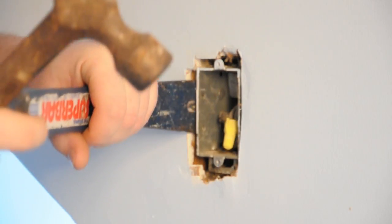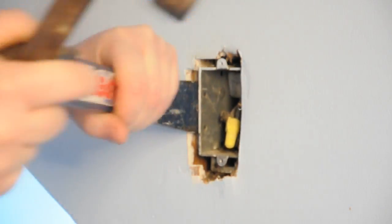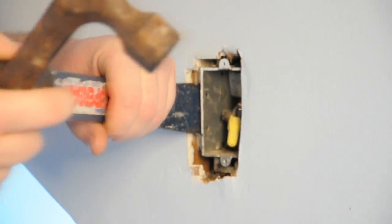Take your flat bar, put it on the side of the box, just pry a little bit. That'll loosen those nails up.